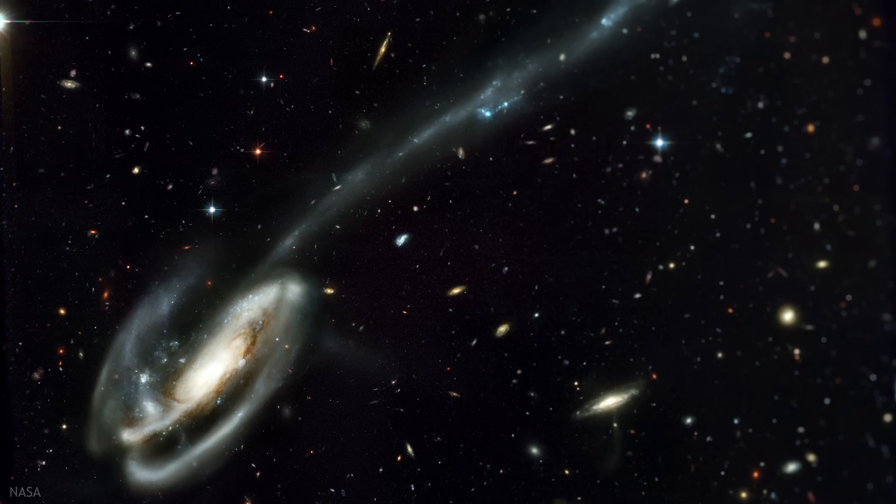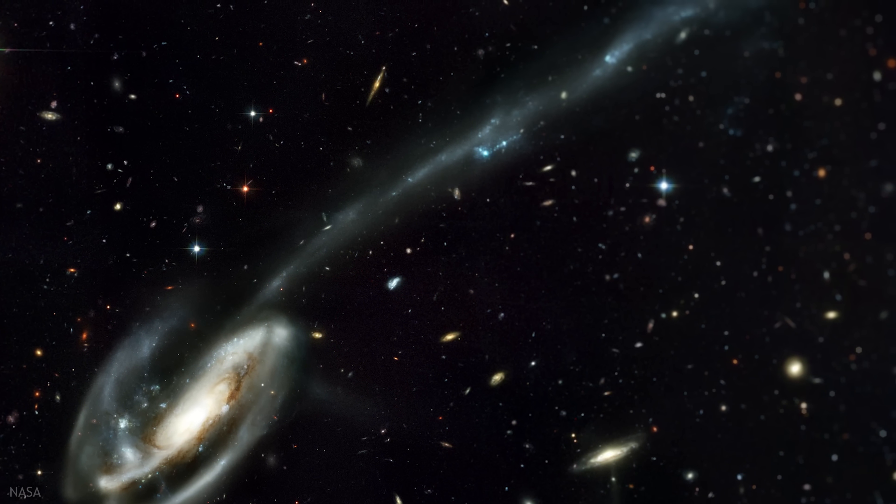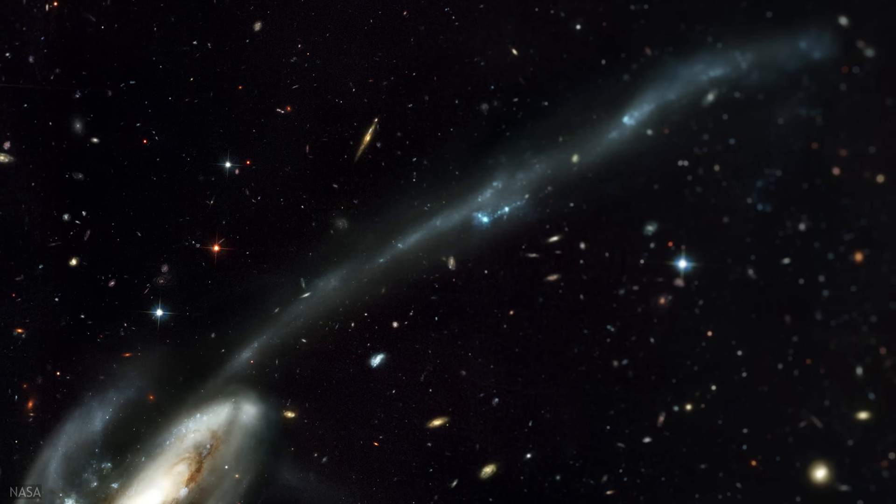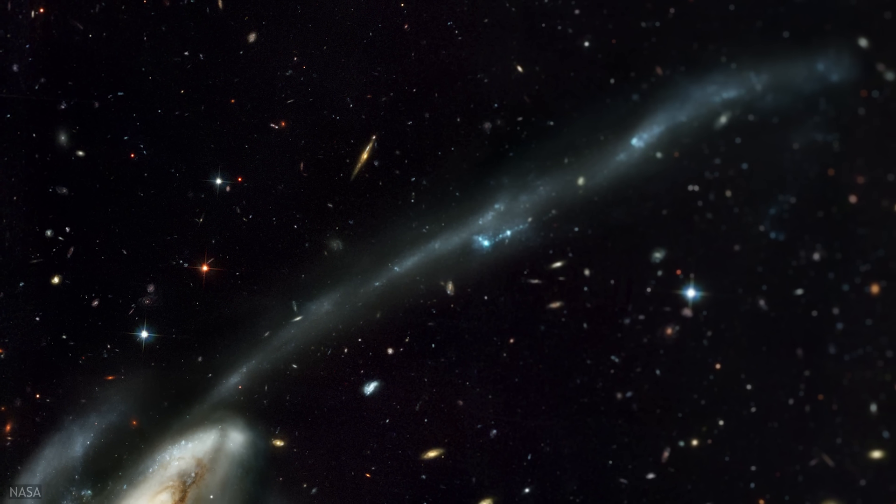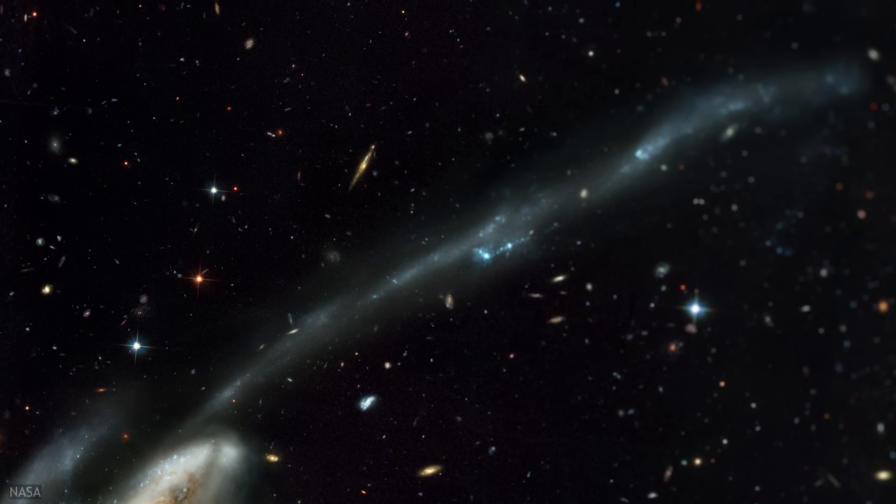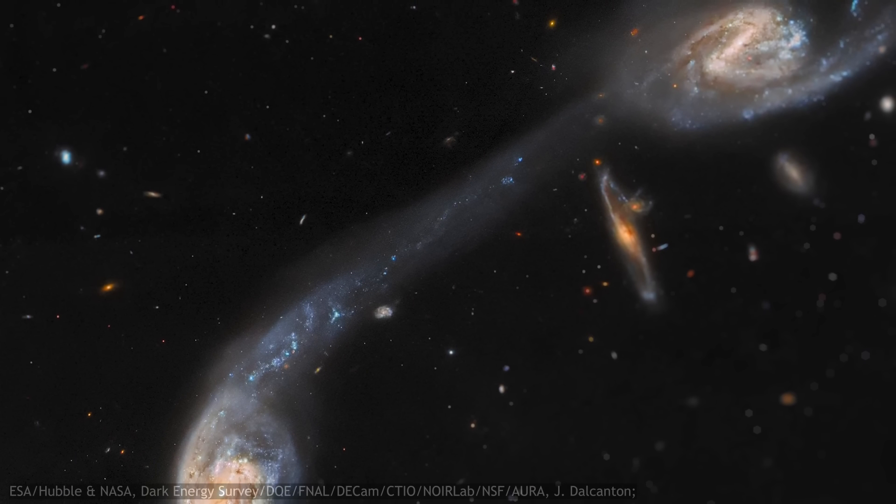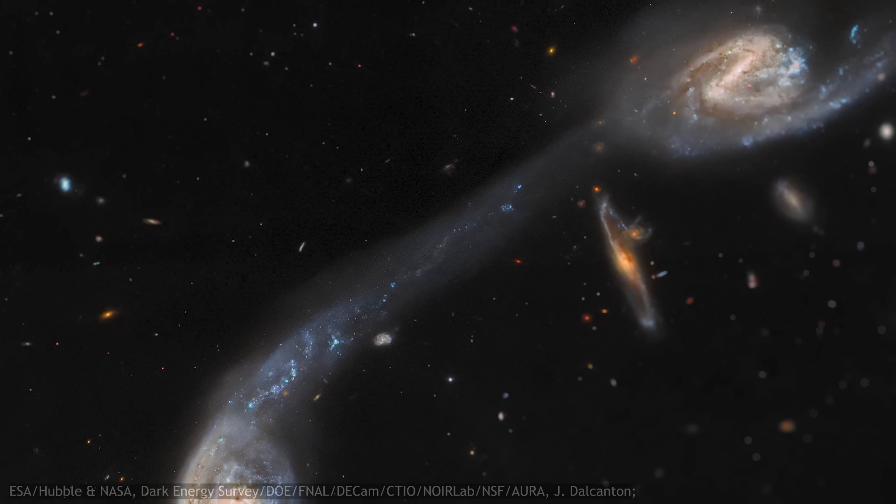Sometimes entire spiral arms can detach from a galaxy, causing a phenomenon known as a tidal tail, an expanse of intense star formation stretching tens of thousands of light years. And between the galaxies, a bridge of gas and stars often develops, as if the galaxies are reaching for each other.